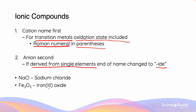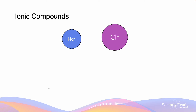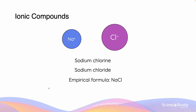We will look at a few examples to see how we implement these nomenclature rules to name ionic compounds. Here we have the elements sodium and chlorine. Since sodium is the cation and chlorine is the anion, we order the names so that sodium is first and chlorine is second. The cation is named first as sodium, with no prefix needed. Then the anion is chlorine, and we modify the ending to "-ide", so now it is sodium chloride. The empirical formula is NaCl, as a 1 to 1 ratio of sodium and chloride ions is needed to cancel out the charges.